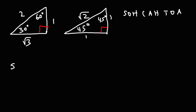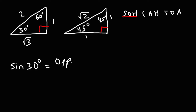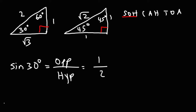Let's find the exact value of sine 30 degrees. Using SOHCAHTOA, sine is equal to the opposite side divided by the hypotenuse. Opposite to 30 is 1 and the hypotenuse of that triangle is 2. So the exact value of sine of 30 degrees is 1 over 2.